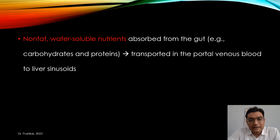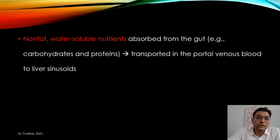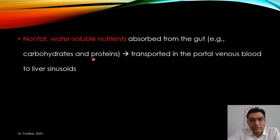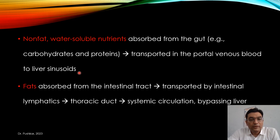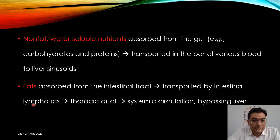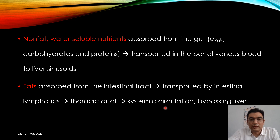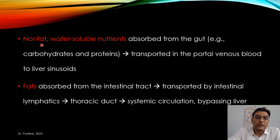In the gut, water-soluble nutrients — non-fat nutrients such as carbohydrates and proteins — are transported in the portal venous blood to the liver sinusoids. While fat in your diet is absorbed by the lymphatics, reaches the thoracic duct, and then enters the systemic circulation, bypassing the liver. Non-fat water-soluble nutrients are absorbed from the gut and transported to the liver sinusoids.